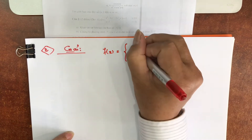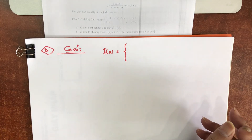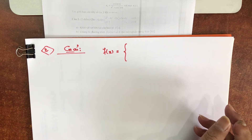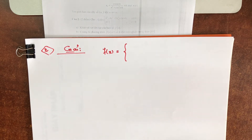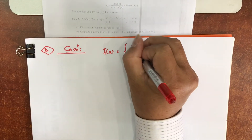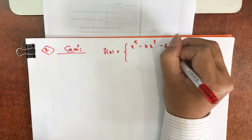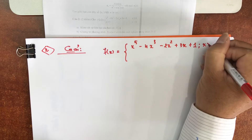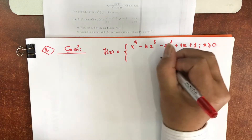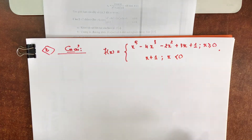Chứng tỏ phương trình này có ít nhất 1 nghiệm. Hàm F(x) gồm: x⁵ trừ 4x³ trừ 2x² cộng 3x cộng 1 khi x lớn hơn hoặc bằng 0, bằng x cộng 1 khi x nhỏ hơn 0. F(x) = x⁵ − 4x³ − 2x² + 3x + 1.